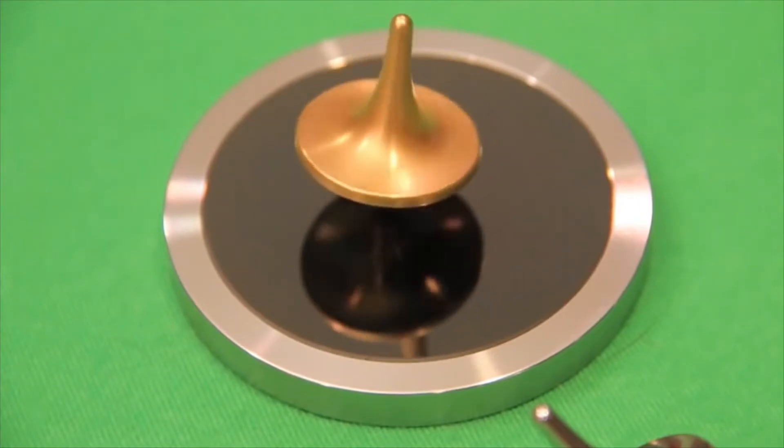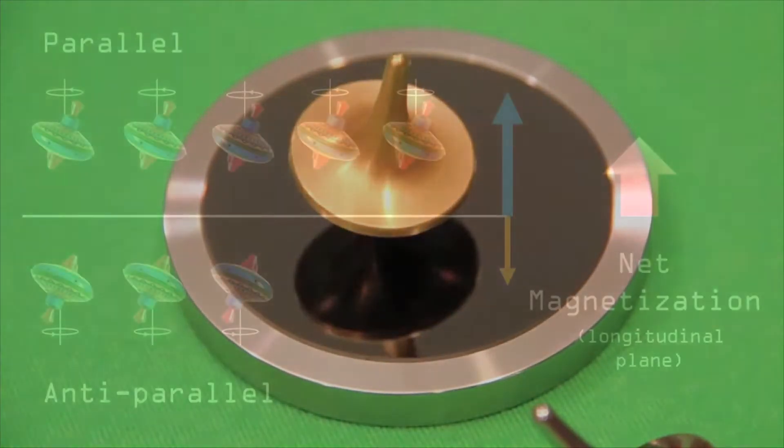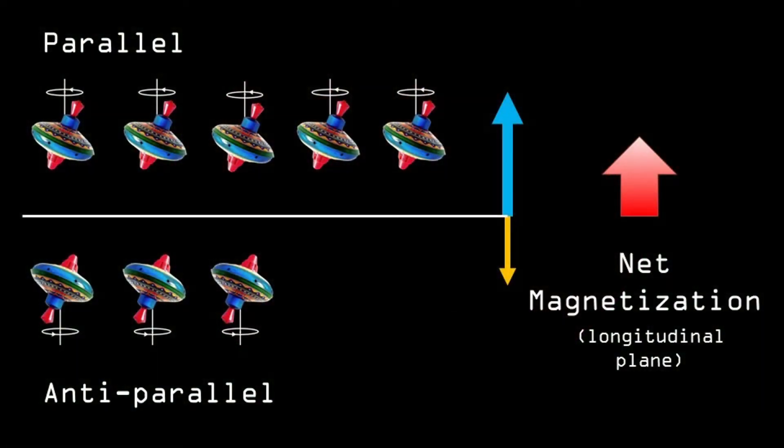So, let's organize all the protons that spin in parallel and anti-parallel direction. If we average everything out, there will be a so-called net magnetization in the parallel direction. So the net magnetization would give us an indication of the amount of hydrogen protons in a specific area.